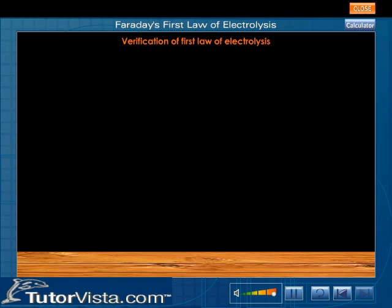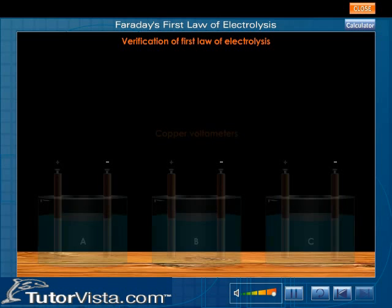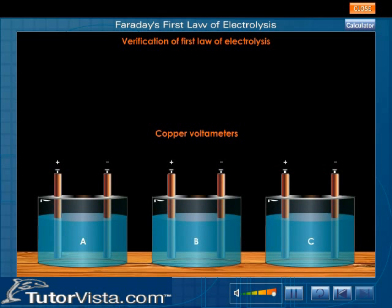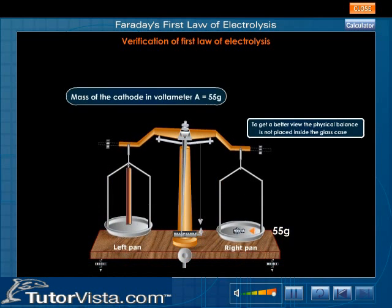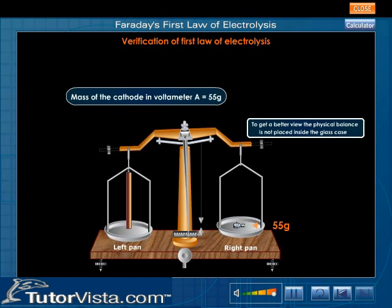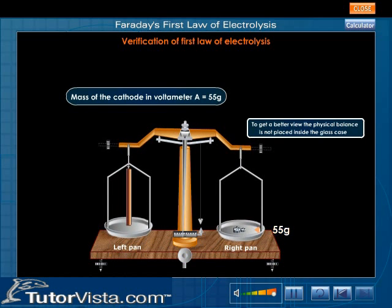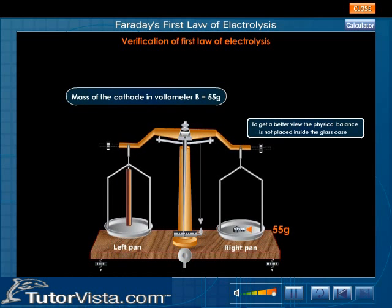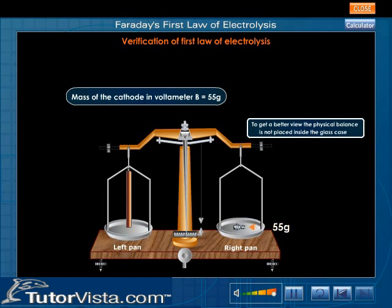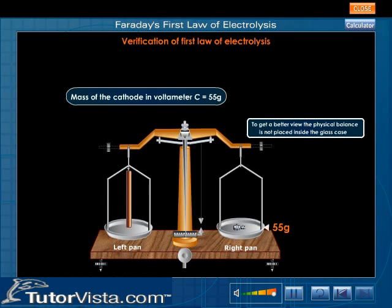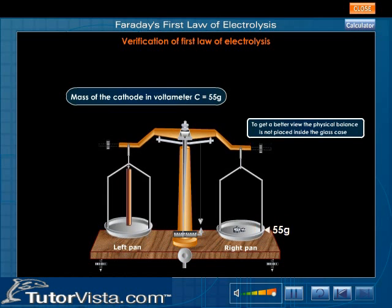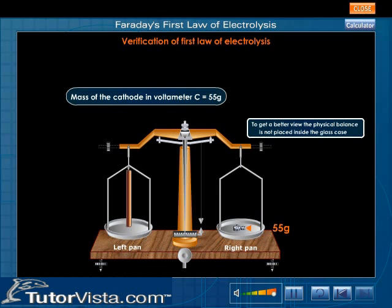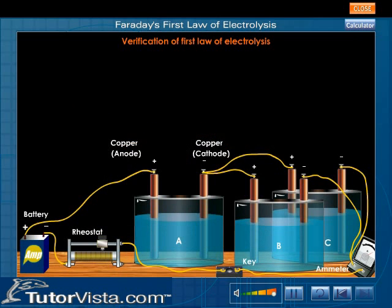Verification of the first law of electrolysis: take three copper voltameters and find the mass of the cathodes. Arrange the three voltameters as shown and switch on the circuit.